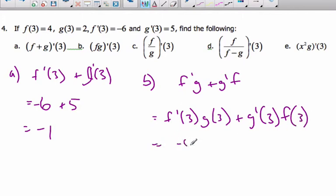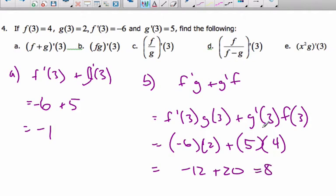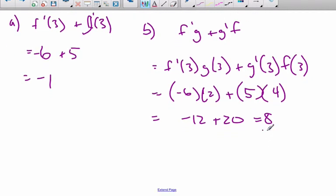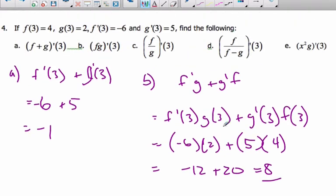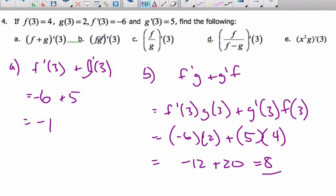Plug in my values. This is negative 6 times g at 3 is 2, times 2, plus g prime at 3 is 5, times f at 3 is 4. And so I get negative 12 plus 20, and that is 8. So this 8 means the slope of the tangent line of this multiplied function at x equals 3 is 8. That's a lot of words. This new function f times g, its slope of the tangent is 8 when x is 3.